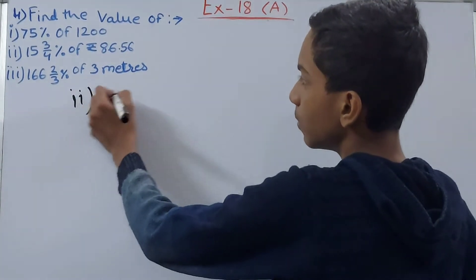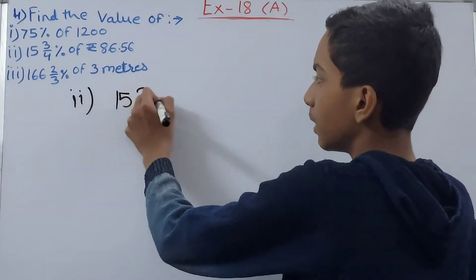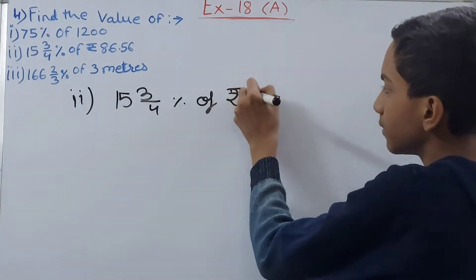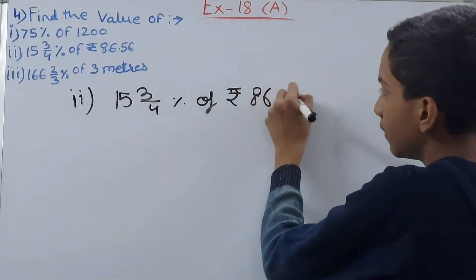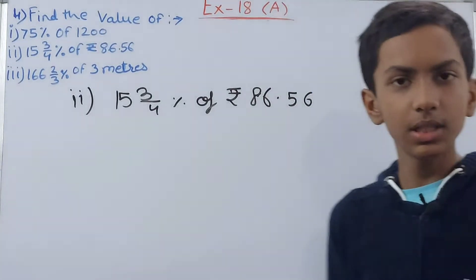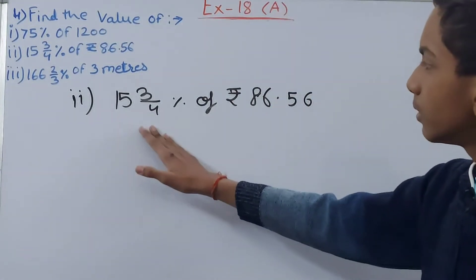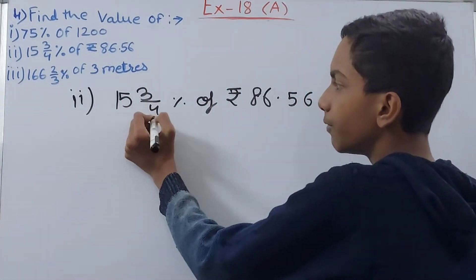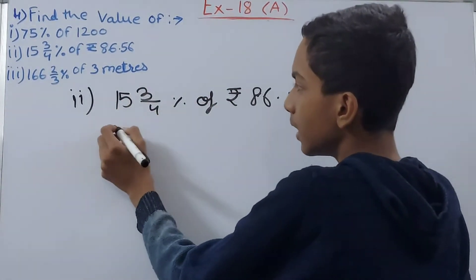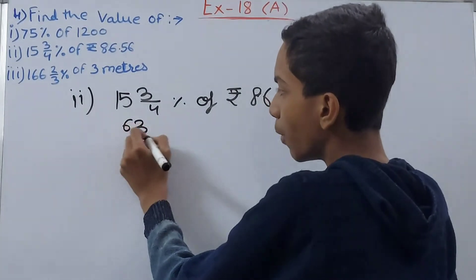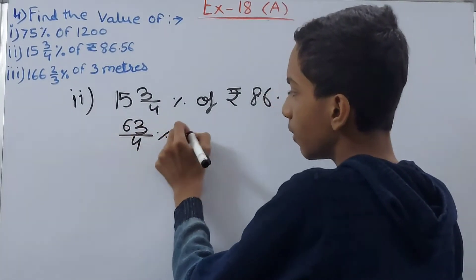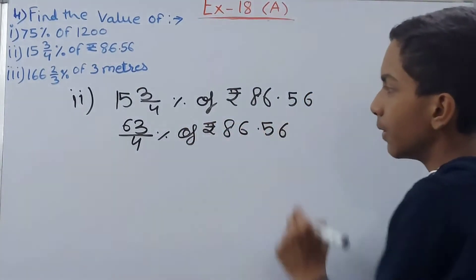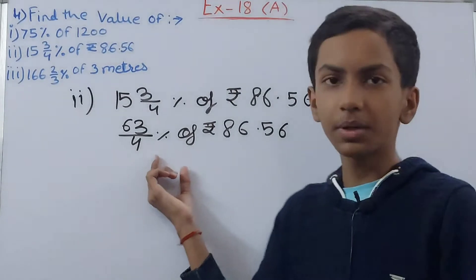Now let's move on to the next one. This is the second part and we have 15 whole 3 upon 5 percent of rupees 86.56. I will write this 15 whole 3 upon 4 percent as—first convert this into improper. So 15 times 4 is 60, and 63. 63 upon 4 percent of rupees 86.56.